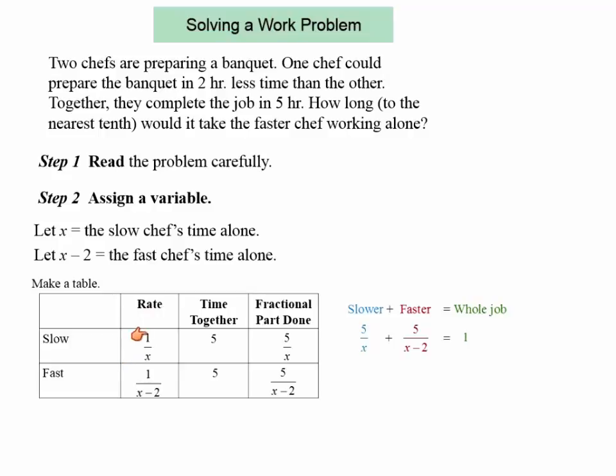So the rate is one over x because we don't know the time for the slower chef. And the rate for the faster chef would be one over x minus two in terms of x. So the fraction of time done by the slower chef would be five over x. And the fraction of time done by the faster chef would be five over x minus two.